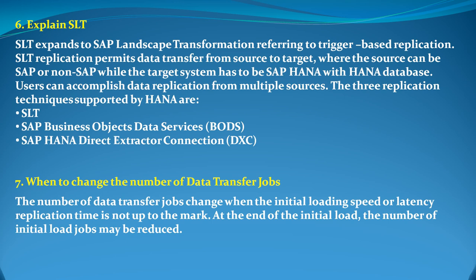When do we change the number of data transfer jobs? The number of data transfer jobs are generally changed when the initial loading speed has latency or replication time issues. That is when we change the number of data transfer jobs. At the end of the initial load, the number of initial load jobs can also be reduced.